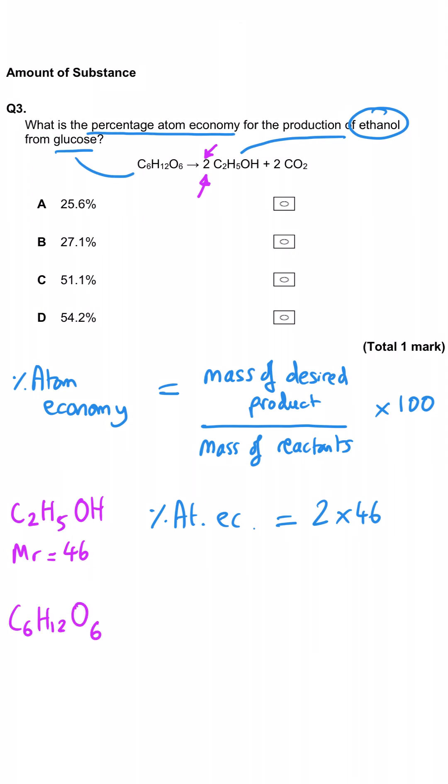The MR of glucose, which is on the left-hand side, is found by adding up 6 lots of 12, 12 lots of 1, and 6 lots of 16.